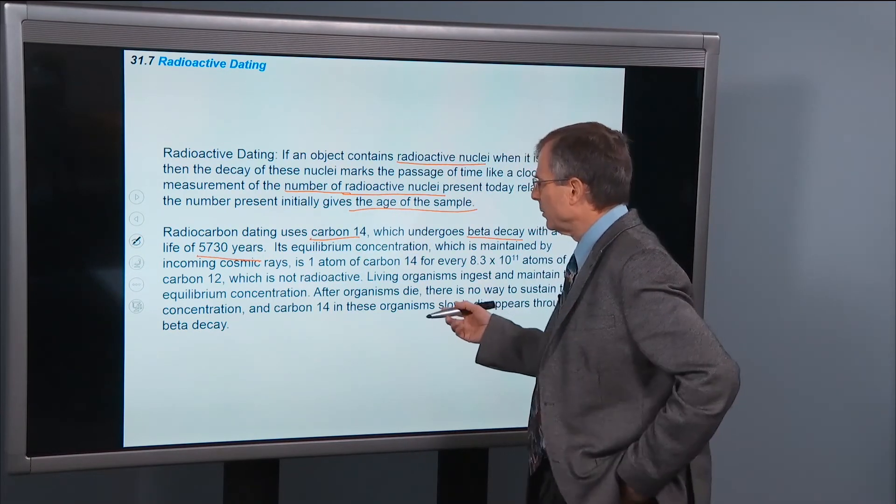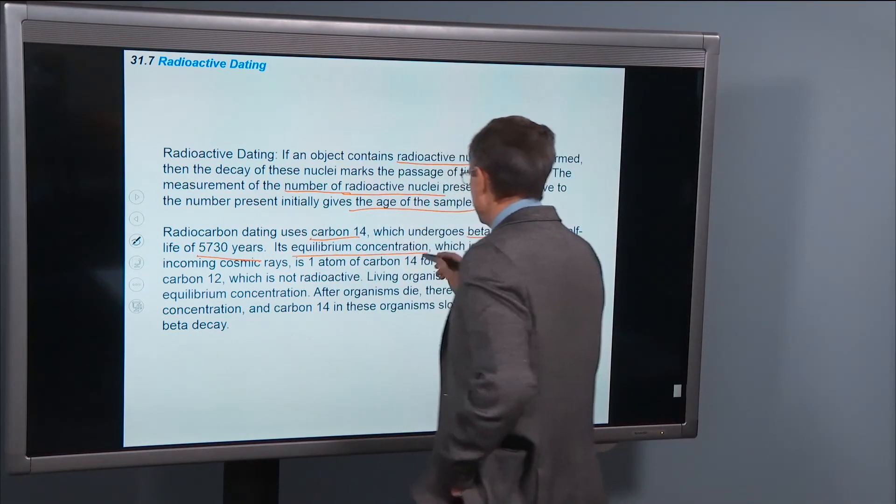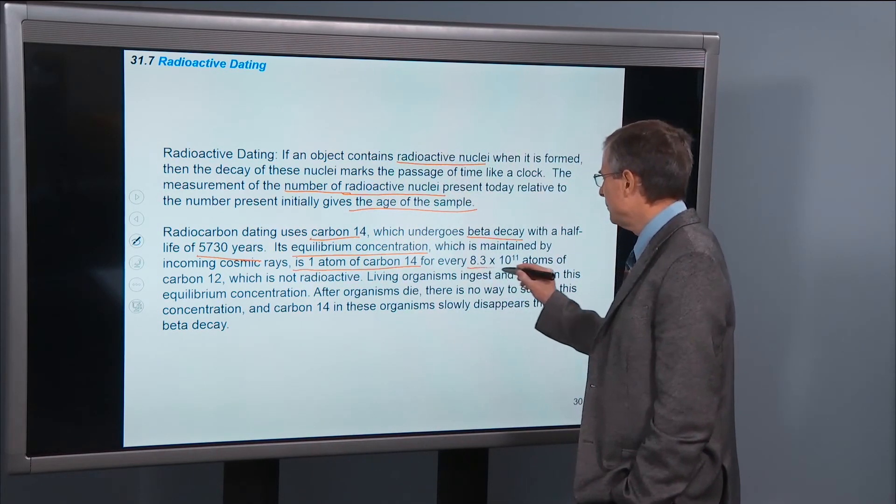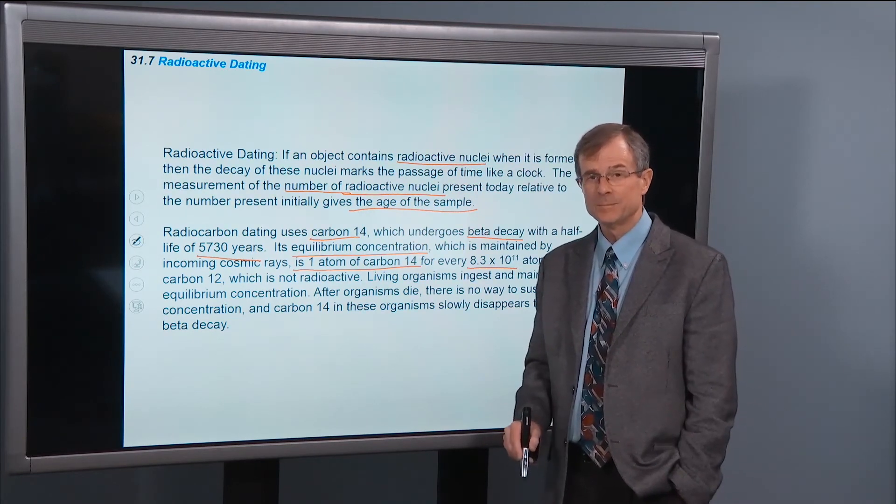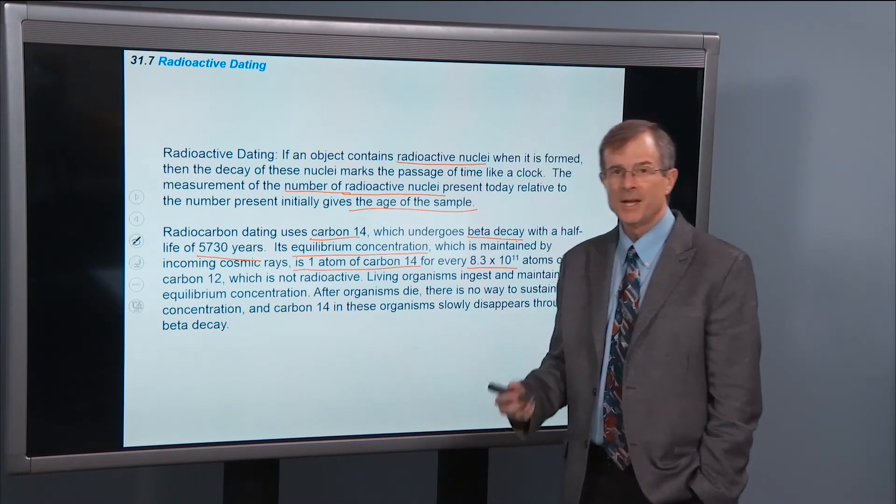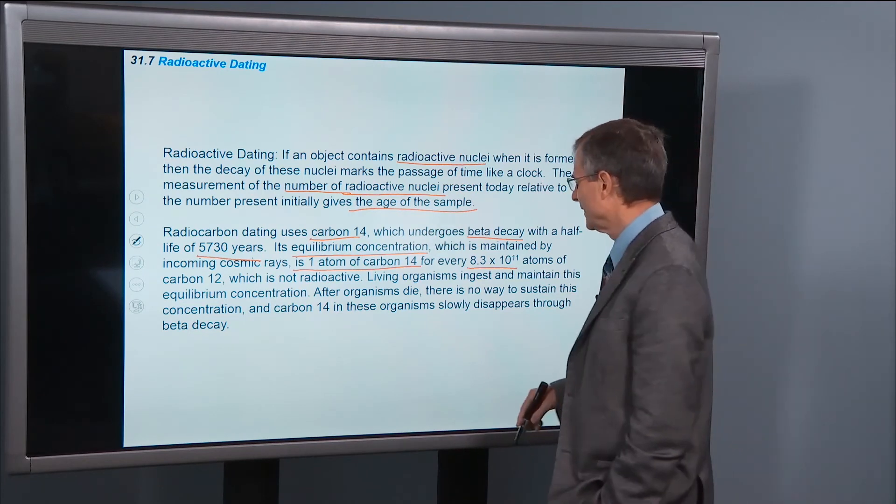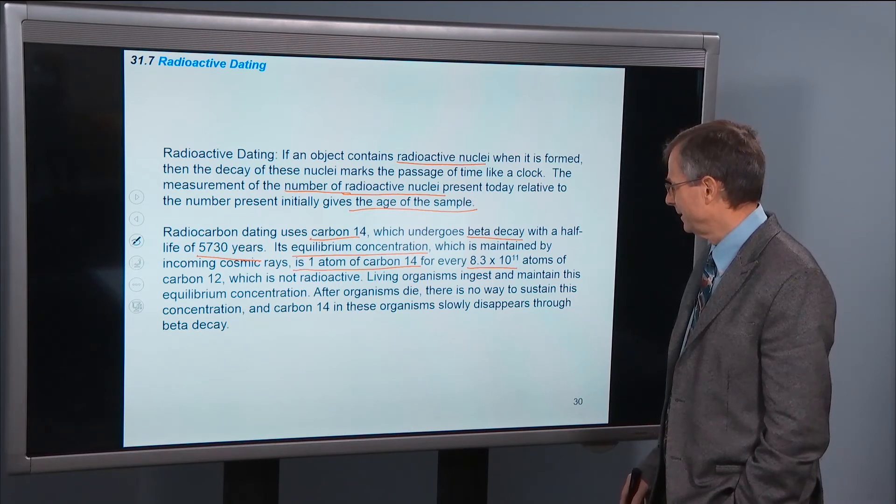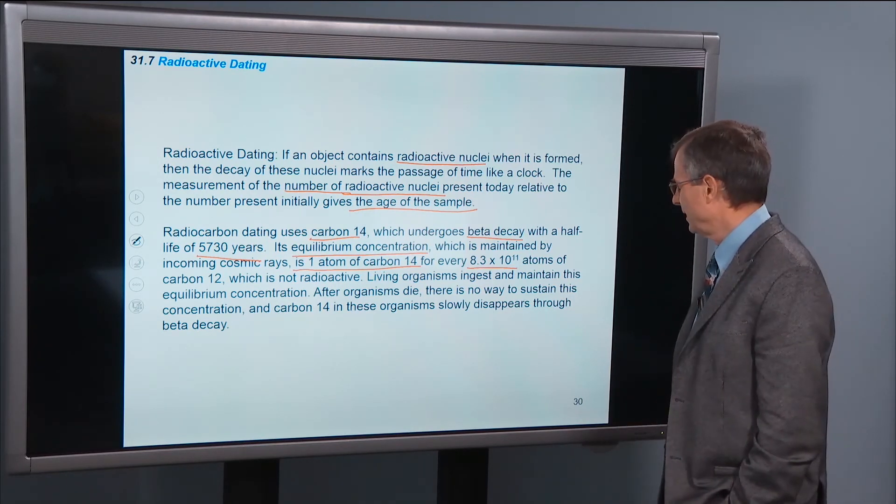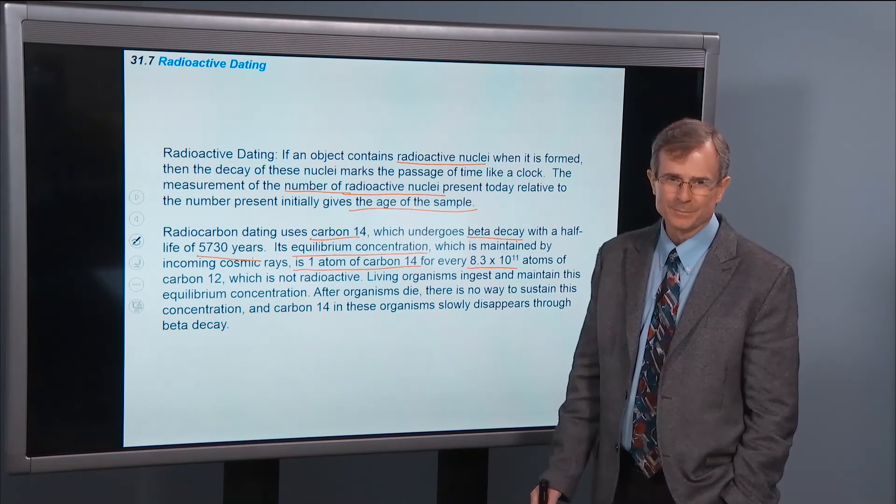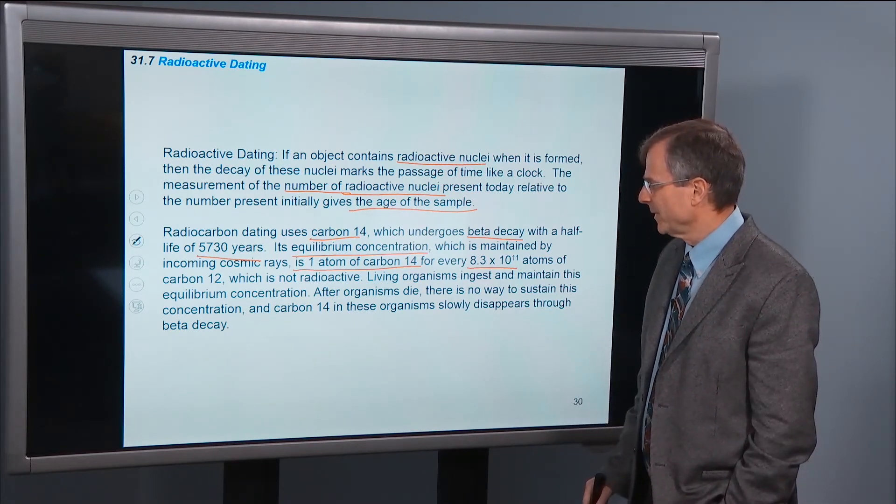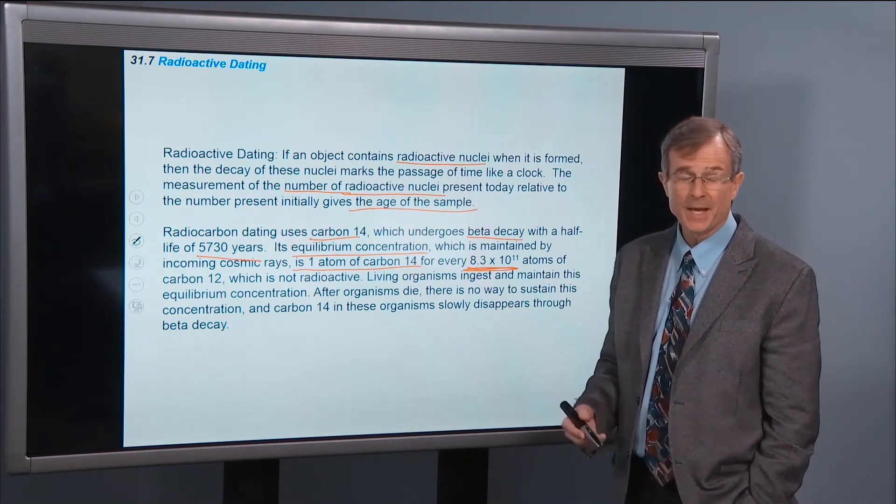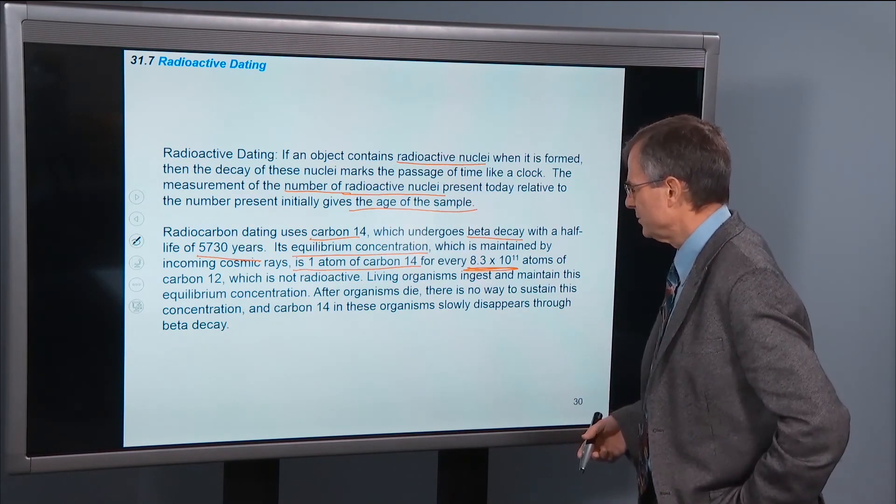So as the carbon-14 decays away, its half-life is 5,700 years, then it's replenished by these carbon-14 atoms coming, or by the cosmic rays coming in. So what's this equilibrium concentration? It's not very much. It's one atom of carbon-14 for every 8.3 times 10 to the 11 atoms of the non-radioactive carbon-12. So we're talking about, oh man, a billion times a billion atoms of carbon-12 for every one atom of carbon-14. But, since we have so many atoms of carbon-12, there's enough atoms of carbon-14 in order for us to date objects.